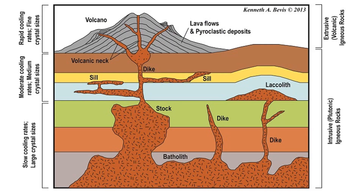Notice how dikes feed sills and laccoliths. Structures like sills and laccoliths occur where magma flowed and cooled between layers of rock. From a distance they may appear like sedimentary strata, but if you look carefully, you will notice that the magma distorted the other layers and the igneous material is very localized. It becomes easier to spot intrusive rocks with more training and experience. Igneous rocks receive different names depending on their composition, appearance, and origin. It is helpful to think about some of the most common types of intrusive and extrusive igneous rocks.